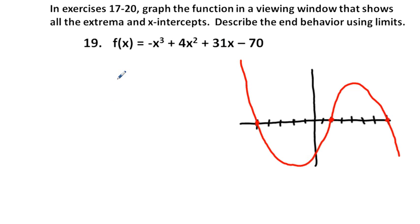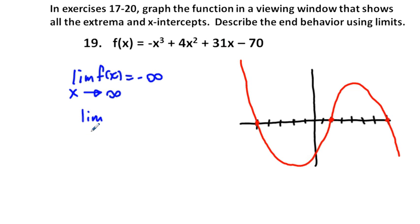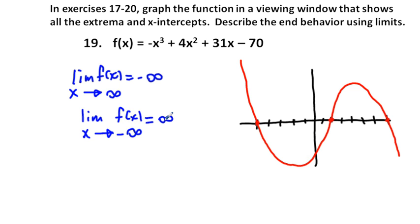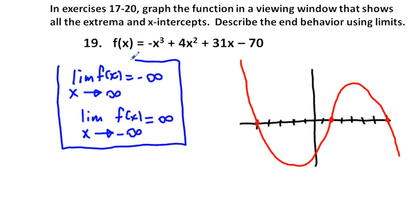Let's write the limit notation for end behavior. The limit as x approaches infinity of f(x) equals negative infinity. The limit as x approaches negative infinity of f(x) — coming from quadrant 2, the upper left — equals positive infinity. The function comes from positive infinity on the left and goes down toward negative infinity as you proceed to the right. That's our end behavior for problem 19.